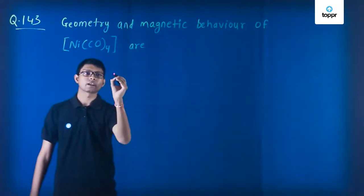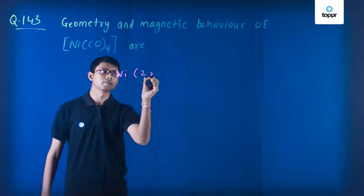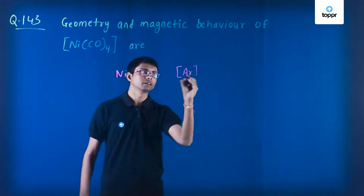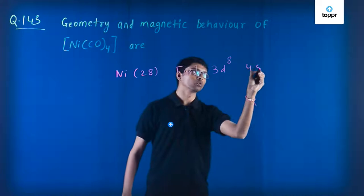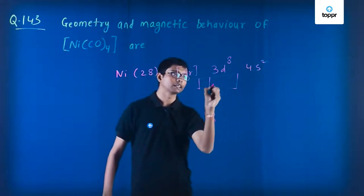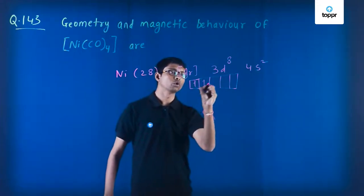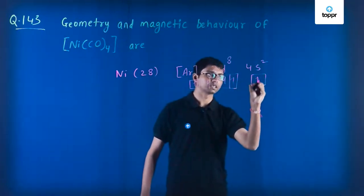First of all, let's see what is the electronic configuration of nickel. Its atomic number is 28. So its electronic configuration will be [Ar] 3d⁸ 4s². We can show the distribution of electrons like this: 1, 2, 3, 4, 5, 6, 7, and 8 electrons in d subshell, and 2 electrons in s subshell.